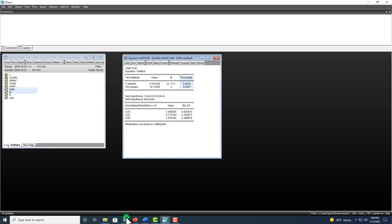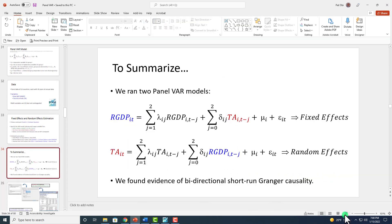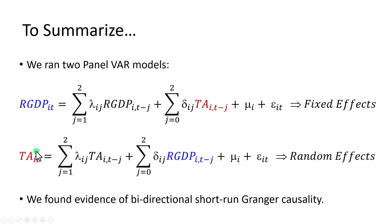With this, we conclude — as summarized on this slide — that in the first panel VAR we examined whether, in the short run, tourism Granger causes real GDP, and in the second instance we determined whether real GDP Granger causes tourism. All things put together, we found evidence of bidirectional short-run Granger causality. Hope you enjoyed it. Let's keep learning.